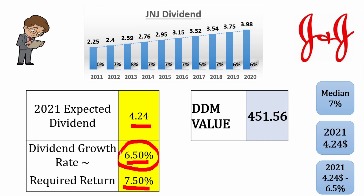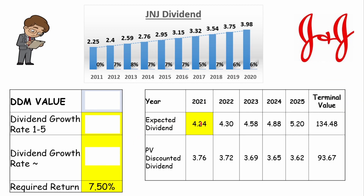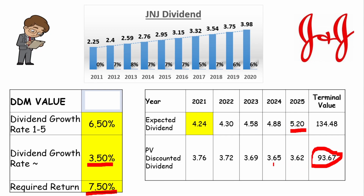We have a solution: the two-stage dividend discount model. We'll grow the dividend over the next 5 years, from 2021 to 2025, at a rate of 6.5%, discounting each year at a required return of 7.5%. From 2025 onward, we apply the simple DDM formula using the 2025 dividend of $5.20, a long-term growth rate of 3.5%, and a discount rate of 7.5%. We discount that terminal value back to today, sum everything up, and arrive at a fair value of $157.26. When recording this video, the current price was $169.25 — so the model didn't come out too far from the current value, though this number isn't necessarily the definitive fair value.